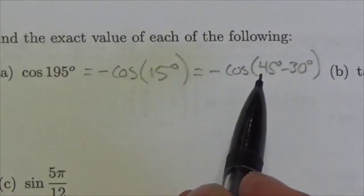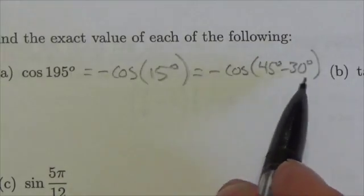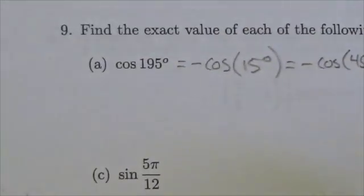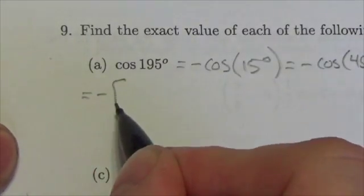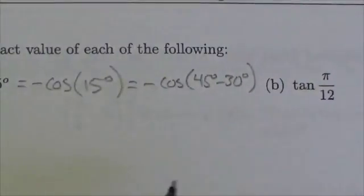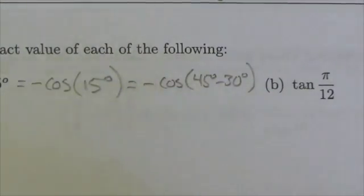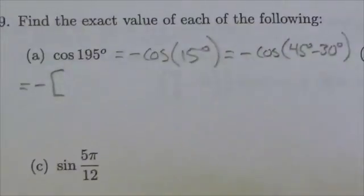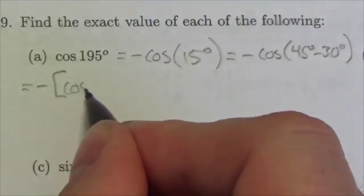So, the negative cosine of 45 minus 30 degrees. Now, I've got this difference identity here, or the beginnings of it. So, this is going to become negative, and I've got to have that negative outside there. That is referring to this negative here, because this negative is applied to the whole expression here.